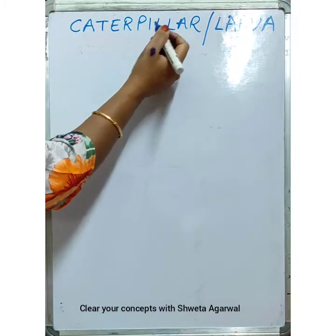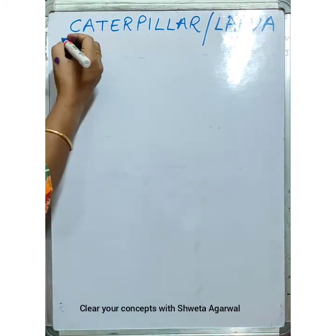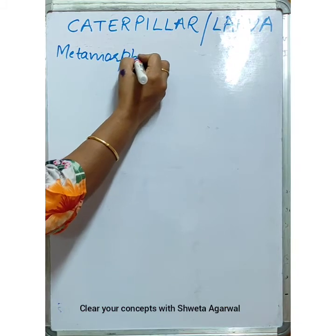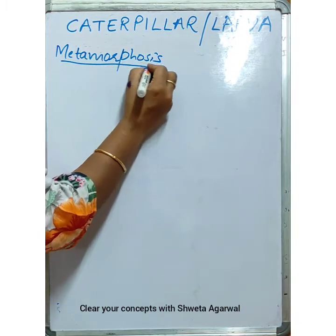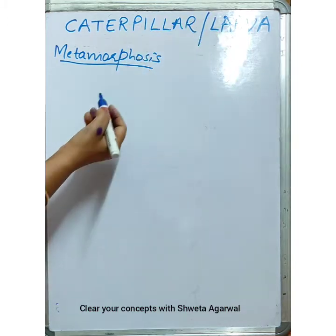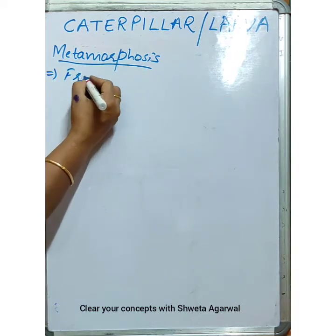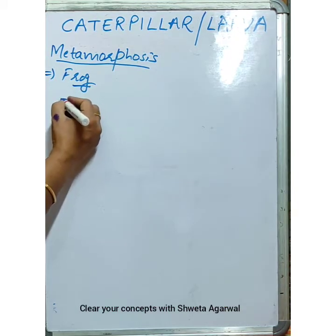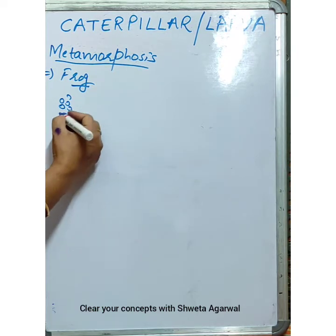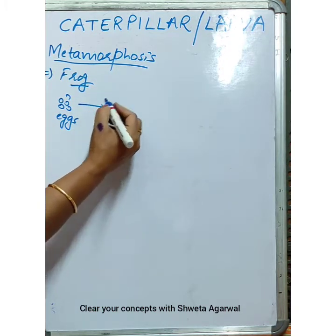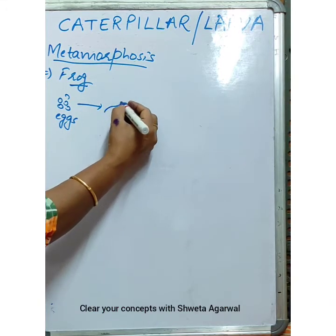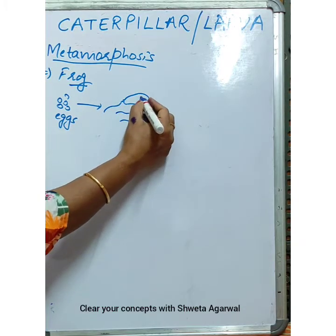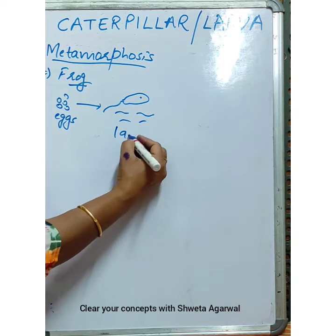The difference between caterpillar and larva. Whenever you study metamorphosis, you will come across these two words: caterpillar and larva. For example, whenever you study the life cycle of a frog, you come to know that the frog lays eggs. From these eggs will hatch out a young one which has a tail and is able to swim effectively in the water. This young one of the frog is called a larva.